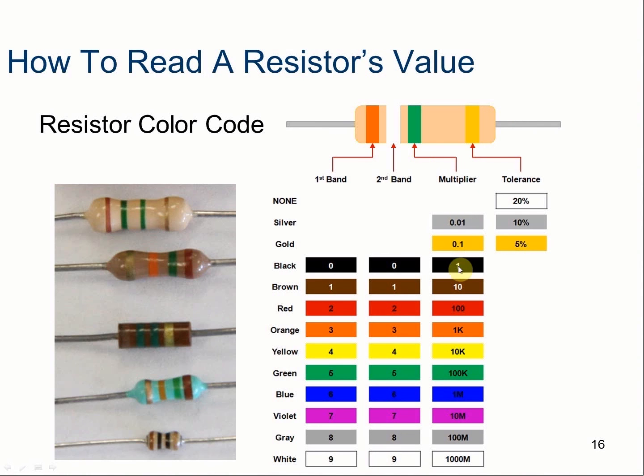So, 0.01, 0.1, 1, 10, 100, 1000, so on. This is the number of zeros, basically, or the multiplier that we need to apply as we read our color codes.